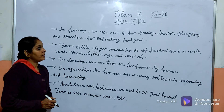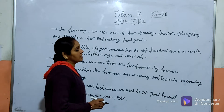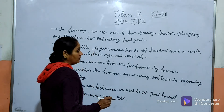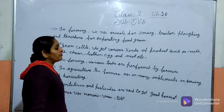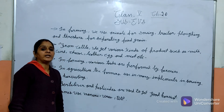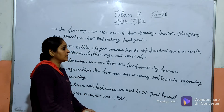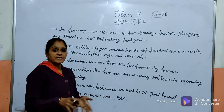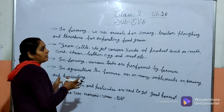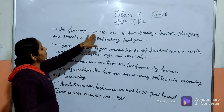Our topic is Agriculture and Farming. This is Class 5th, Chapter 20, subject Social Studies India. Farming is the same thing as agriculture — it is what we do in the fields. Today's chapter is about depending on agriculture and farming.